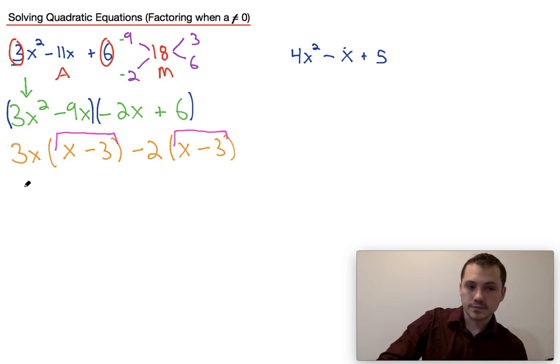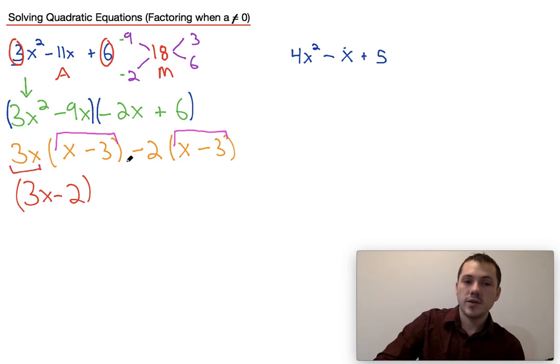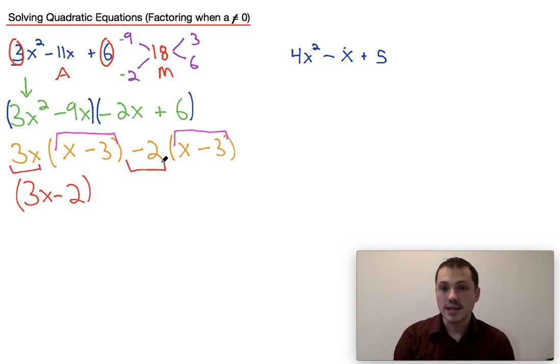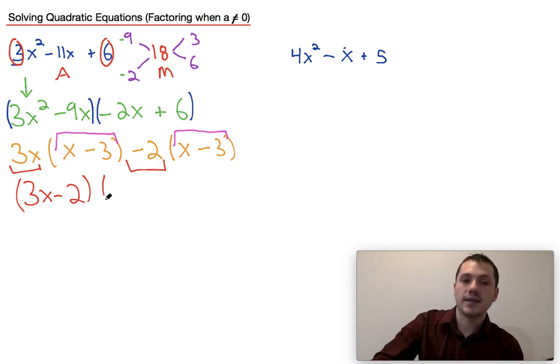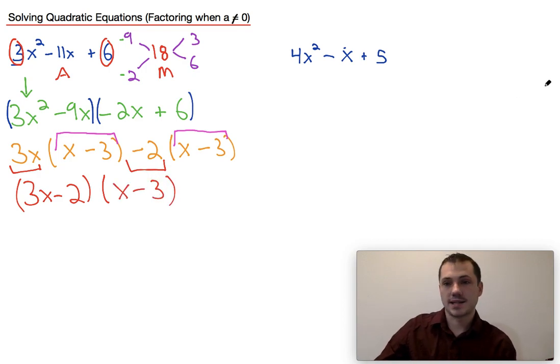Now, what you do at the end is you bring this value and this value together and you put them in parentheses. So since it's a 3x and there's a negative 2, we're going to factor out a 3x minus 2, and then the x minus 3 and the x minus 3 come together as a single x minus 3.